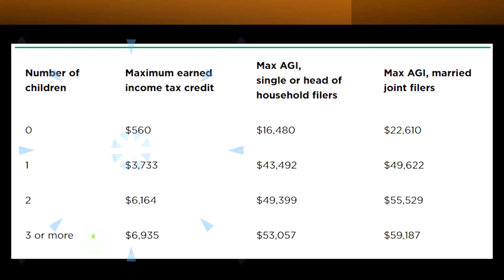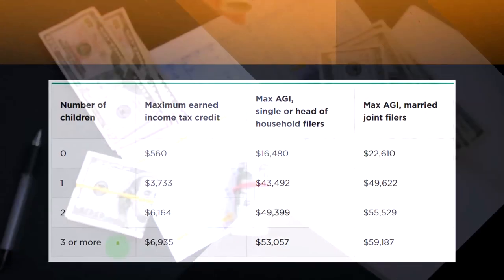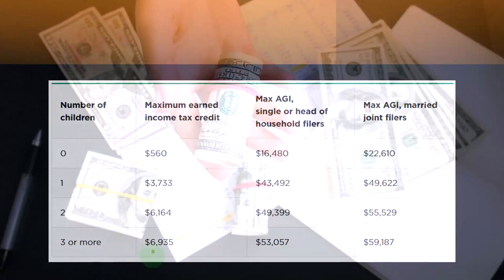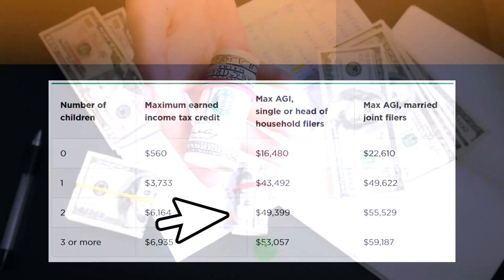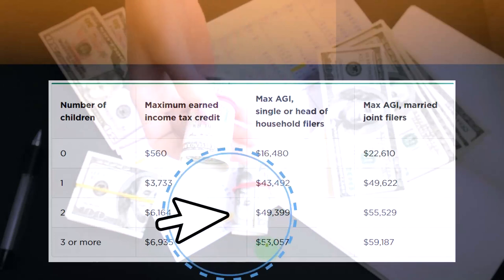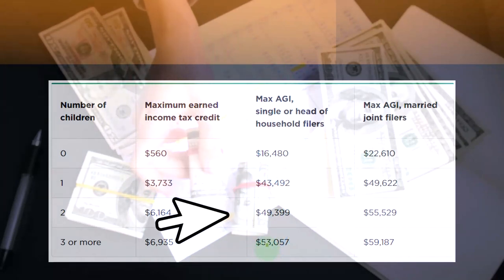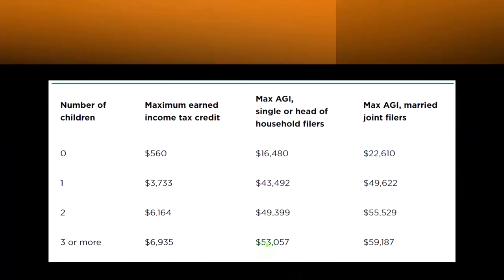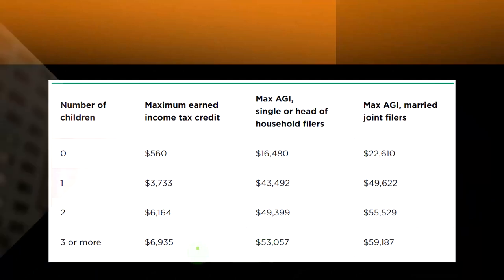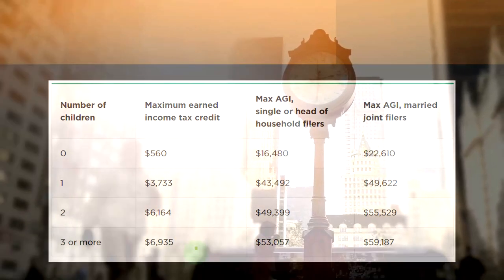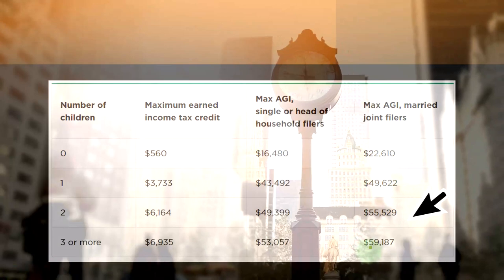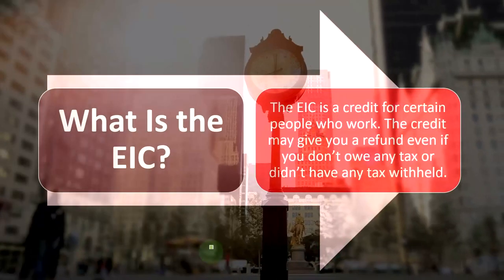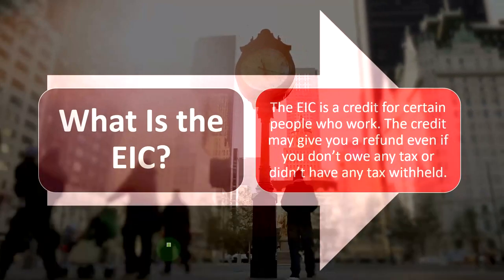For three or more children, the credit caps at three — no additional benefit is provided for more than three children. The maximum credit is $6,935, with a phase-out AGI threshold of $53,057 for single filers — again, that's the maximum income before losing the credit entirely, not the income level that maximizes the credit. For married filing jointly, the threshold is $59,187. That covers the general table — we'll get into more detail shortly.